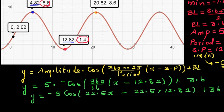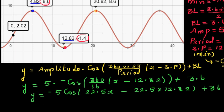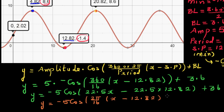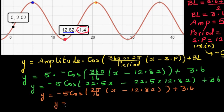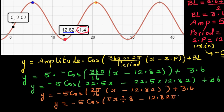You can also write the same equation in radians. The equation is almost the same: y equals minus 5 cosine of 2 pi divided by 16, times x minus 12.82, close the bracket, plus 3.6. Simplifying, this is y equals minus 5 cosine of pi x divided by 8, minus 12.82 pi divided by 8, plus 3.6.